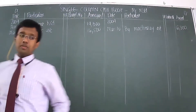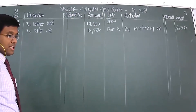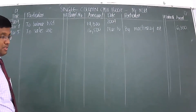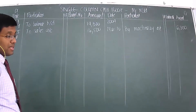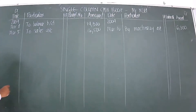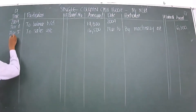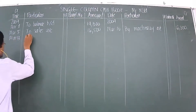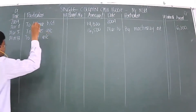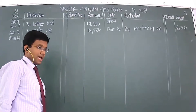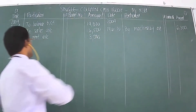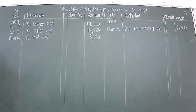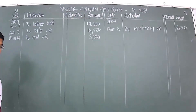March 13th: rent received from tenant. Here you're receiving rent — someone is paying you rent, so cash would be coming in. The entry is on the debit side: To Rent Account, and the amount is 3,000.